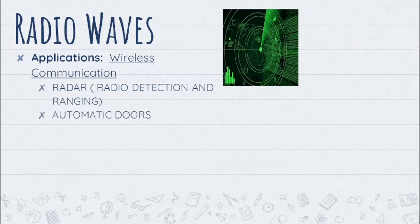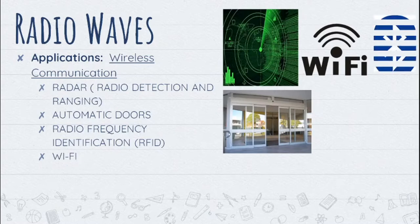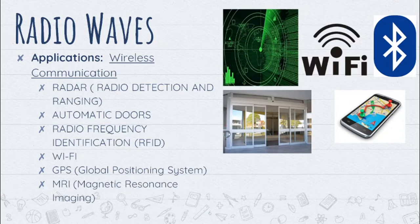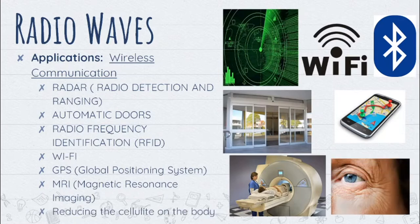We also have automatic doors, radio frequency identification or RFID, Wi-Fi, Bluetooth, and GPS or the Global Positioning System, which measures the time it takes for a radio wave to travel from several satellites to the receiver, determining the distance to each satellite, and used to determine directions. We also have MRI or Magnetic Resonance Imaging, which is used for viewing internal parts of the human body without invasive exploratory surgery. And lastly, it is also used for reducing cellulite on the body such as wrinkles.